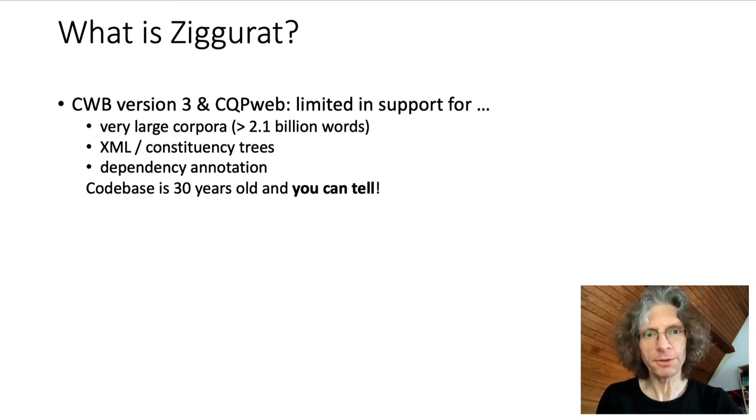Corpus Workbench was originally developed in the 1990s. In the meantime, lots of additional features have been tacked on up to the current version 3.5. With these additional features, CWB is still a competitive engine for indexing and querying large corpora. We've also taken care to ensure backwards compatibility, and we can still work with corpora that were indexed in the last millennium.